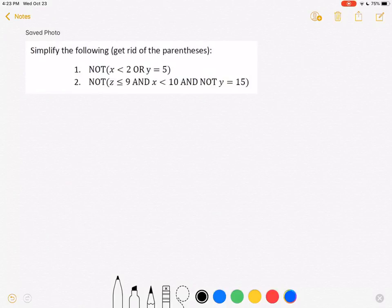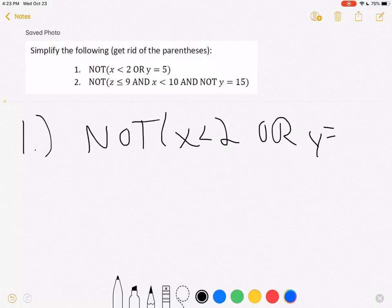I can use De Morgan's Laws to simplify each of these. So here I have the statement not x is less than 2 or y is equal to 5. So using De Morgan's Laws, this should be the same as,